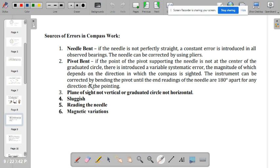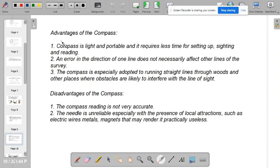So these are some of the sources of errors in compass work. We are going to talk about mostly on the magnetic variations in this topic. What are the advantages of the compass? Compass is light and portable, and it requires less time for setting up, sighting, and reading. So an error in the direction of one line does not necessarily affect other lines of the survey. The compass is especially adapted to running straight lines through woods and other places where obstacles are likely to interfere with the line of sight.